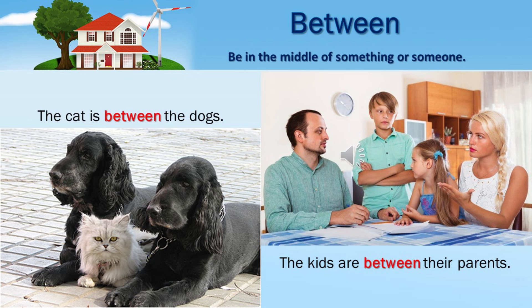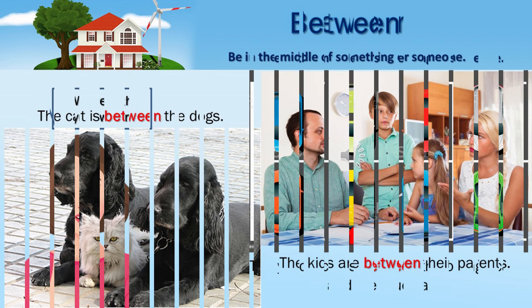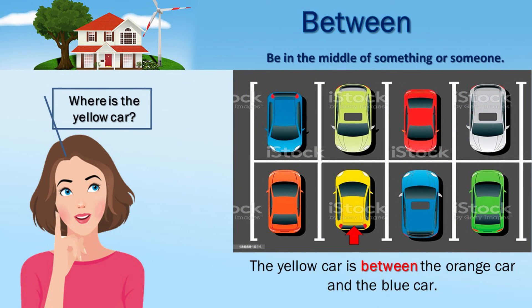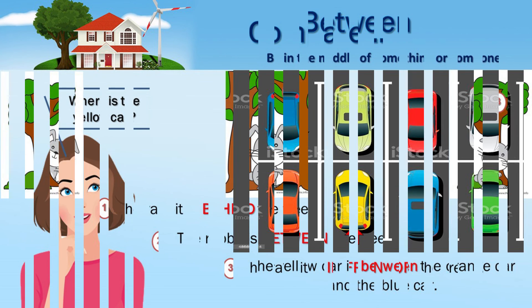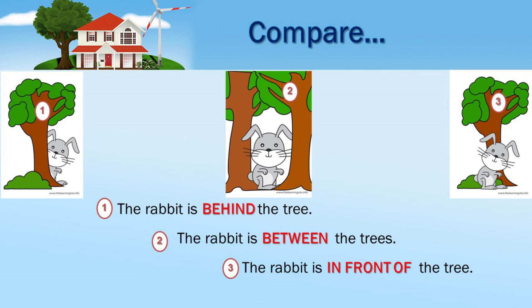The kids are between their parents. Between — be in the middle of something or someone. Where is the yellow car? The yellow car is between the orange car and the blue car. Compare: 1. The rabbit is behind the tree. 2. The rabbit is between the trees. 3. The rabbit is in front of the tree.